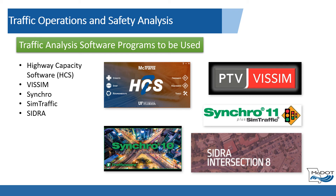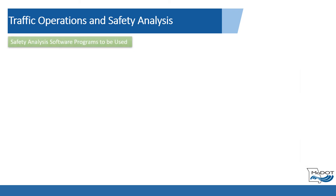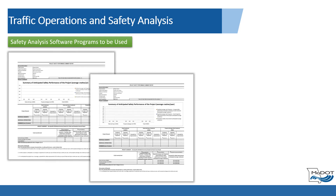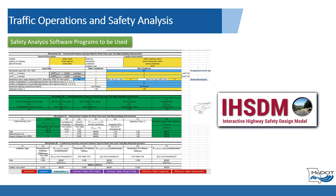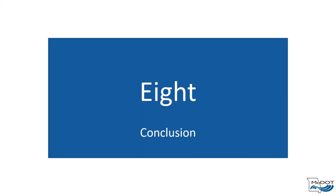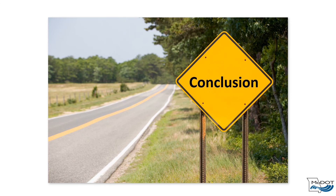This section may also be used to justify the software selection or, in the case of multiple programs, to explain what task each software program will be used to complete. Section 8 of the Methods and Assumptions Report Template is Conclusion. This section should document a brief summary of the study's intent and methodology.